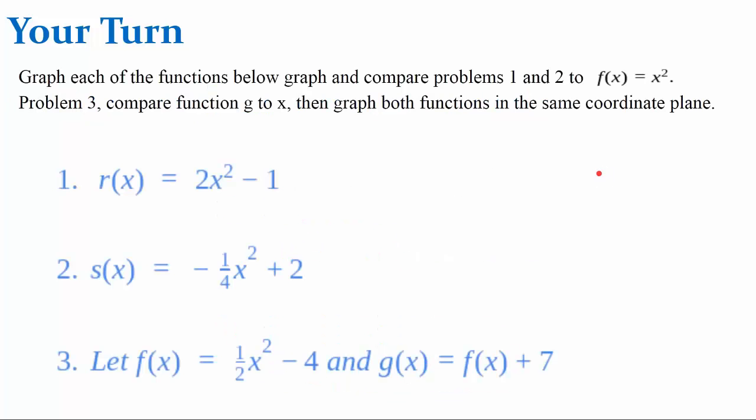Your turn — here are three problems for you to do. Graph each function and compare problems one and two to the parent function f of x equals x squared. For problem three, just like the previous problem, graph function f and function g, describe what type of transformation g is relative to f, graph them in the same coordinate plane, and write function g in terms of x. Go ahead and pause, then come back and hit play when you're ready to check your answers.